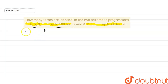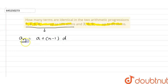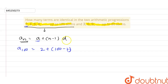We have the formula: aₙ = a + (n−1)×d. Here, if we put n equal to 100, the first term a is 2, and the common difference d is 4 minus 2, which equals 2.